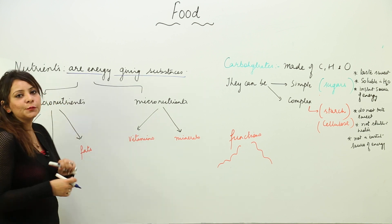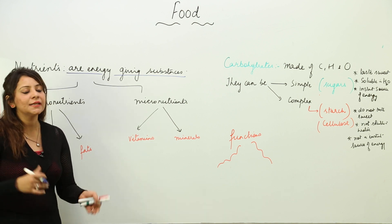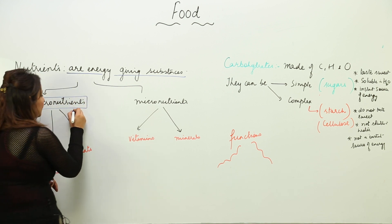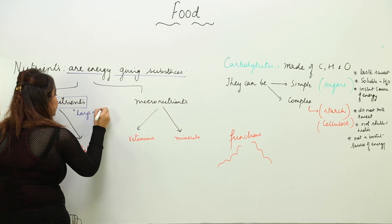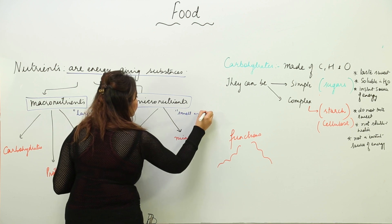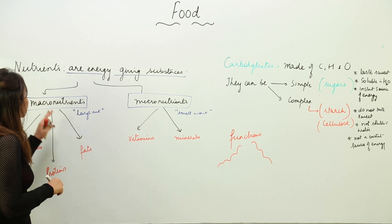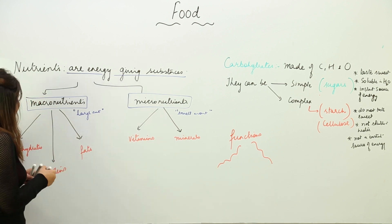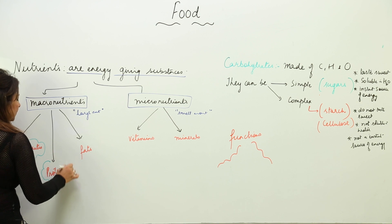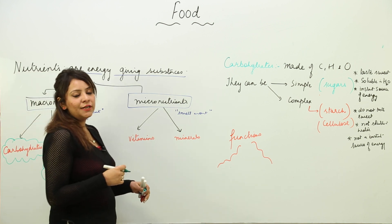Nutrients have been classified depending upon whether they are required in large amount or less amount. They have been classified into two categories: macronutrients, which are required in large amount, and micronutrients, which are required in small amount. Macronutrients include carbohydrates, proteins, and fats - they are all required in large quantity.